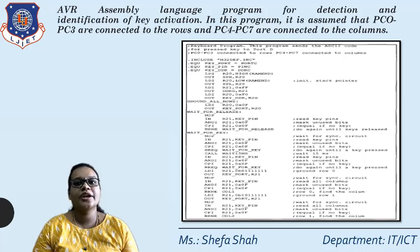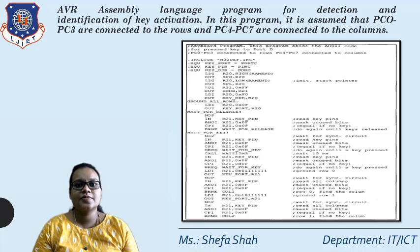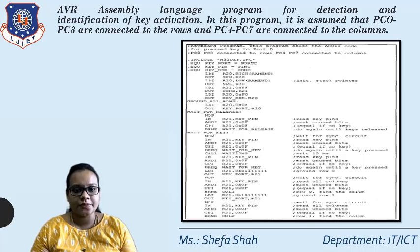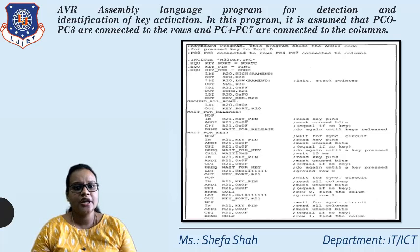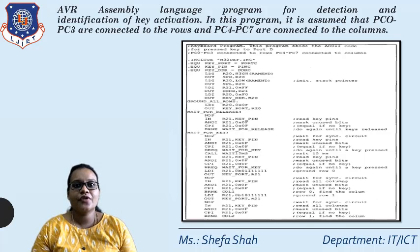First we initialize the stack, then configure Port C with the higher nibble as input (columns) and lower nibble as output (rows). Port D is configured as output since the pressed key's value will be displayed there. To ground all rows, we load 0x0F into r20 and output it to Port C using the OUT instruction. We then check if any row has been grounded; if not, we wait for a key to be pressed using the 'wait for release' subroutine.